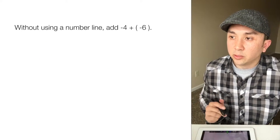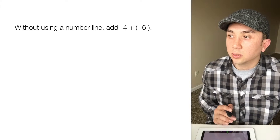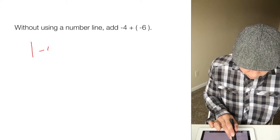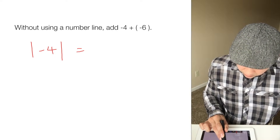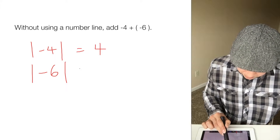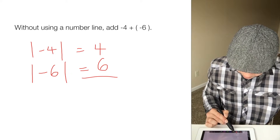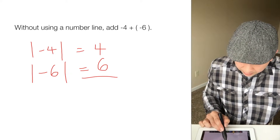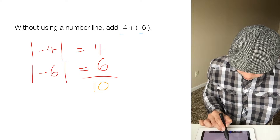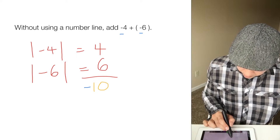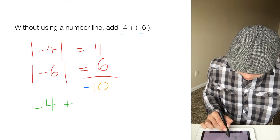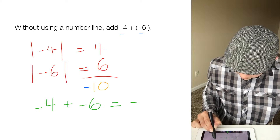So without using a number line, add negative 4 plus negative 6. We take the absolute value of negative 4, which is 4, and the absolute value of negative 6, which is 6. We add them: 4 plus 6 is 10. Because both numbers are negative, we add a negative sign. So negative 4 plus negative 6 equals negative 10.